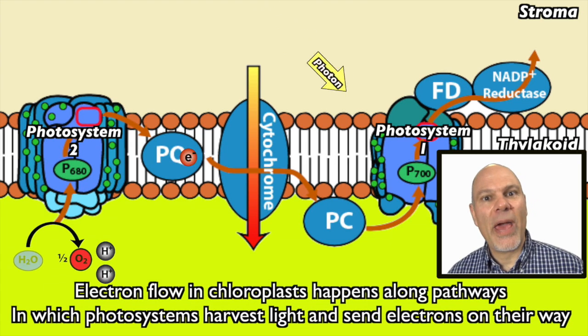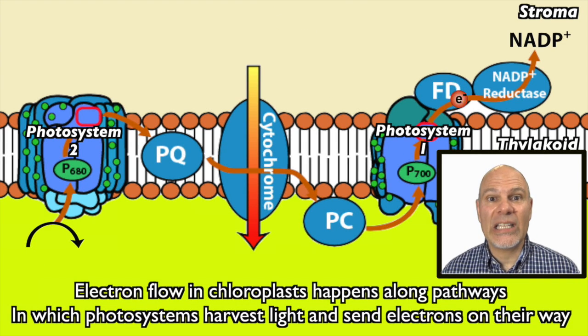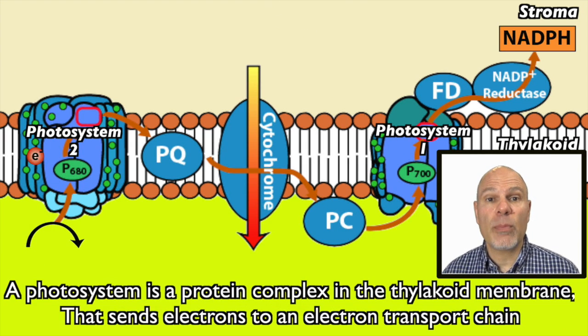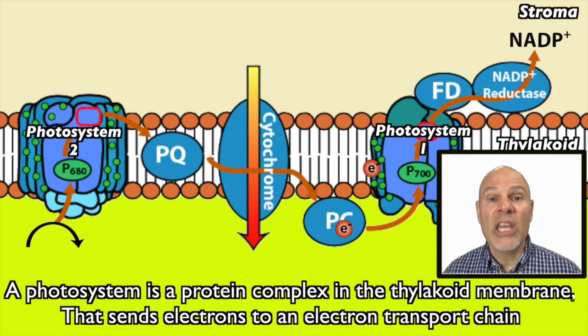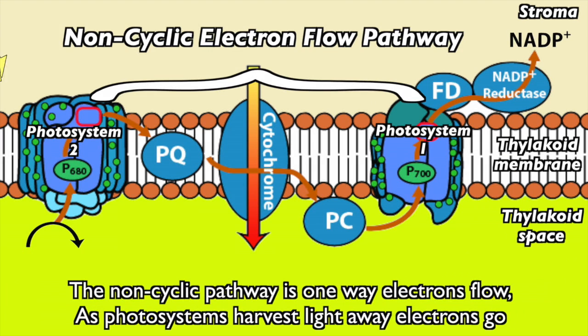Electron flow in chloroplast happens along pathways in which photosystems harvest light and send electrons on their way. A photosystem is a protein complex in the thylakoid membrane that sends electrons to an electron transport chain. The non-cyclic pathway is one way electrons flow.